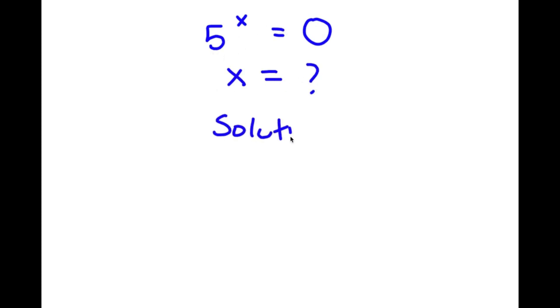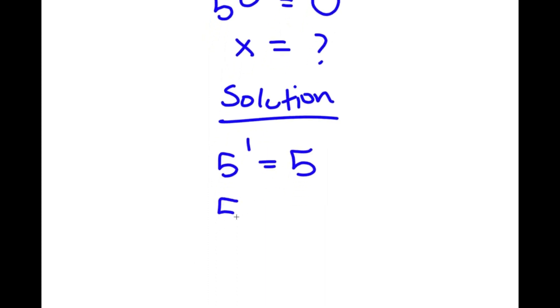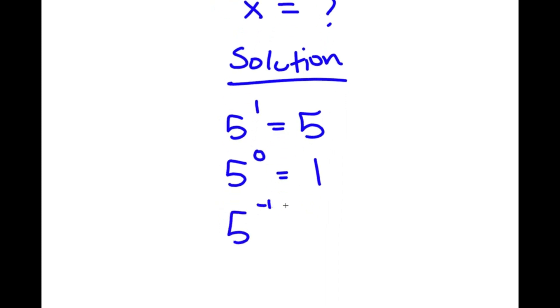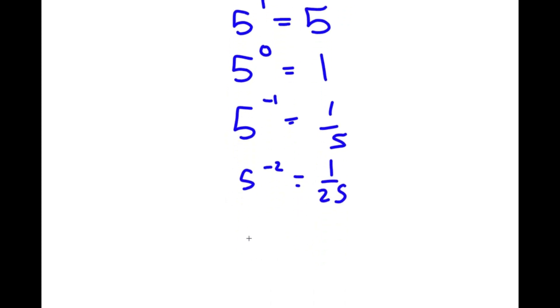In this problem I have 5 to the power of x is equal to zero, and I want to find the value of x. I'll start by trying out values of x. If I have 5 to the power of 1, this equals 5. 5 to the power of 0 is 1 — any number to the power of zero is 1. 5 to the power of negative 1 is 1/5, negative 2 is 1/25, and 5 to the power of negative 10 is 1 over 5 to the power of 10.